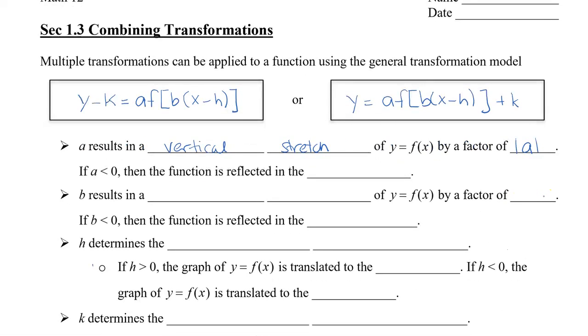Of y equals f of x by a factor of a, and I'm going to put a in absolute values to say we're ignoring the negative sign right now. Now if a is negative then we're going to say the function is reflected in the x-axis.